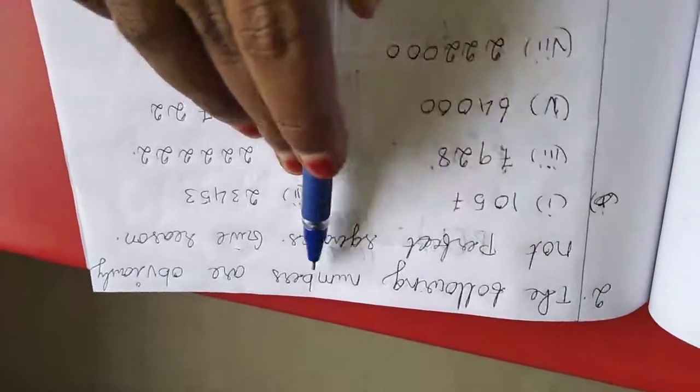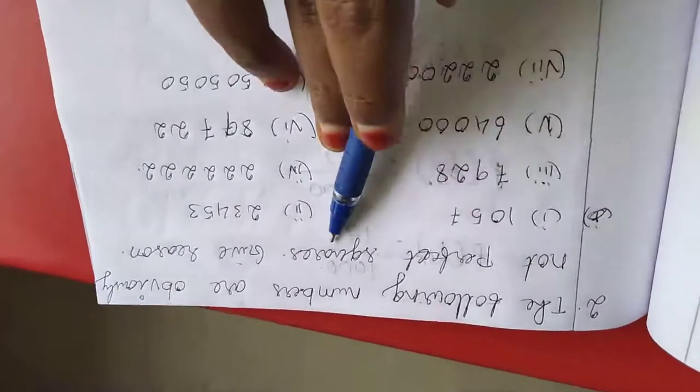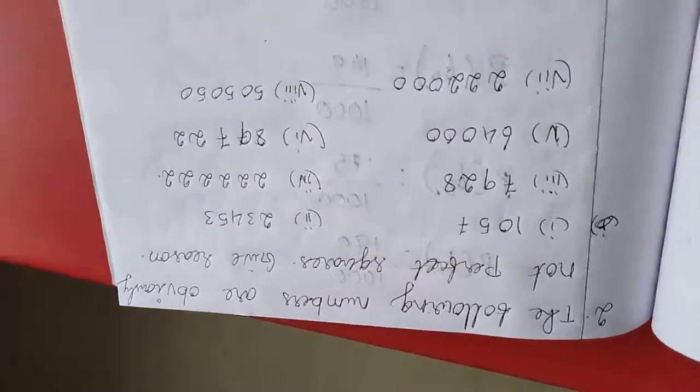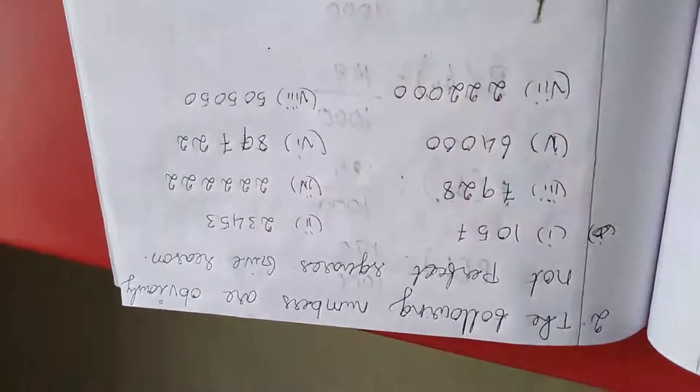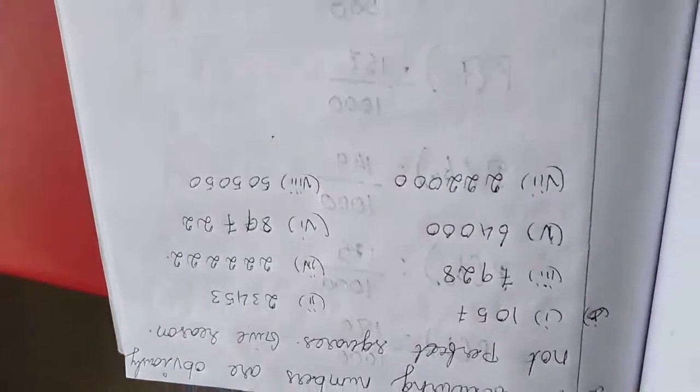See here, the following numbers are obviously not perfect squares. They give reasons. They itself are telling this number is not a perfect square. So, they are asking the reason with us. Just see here.